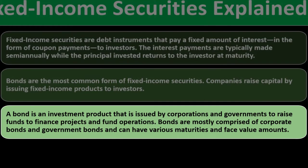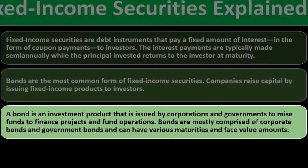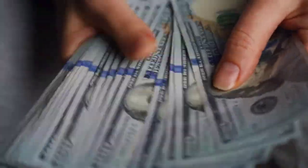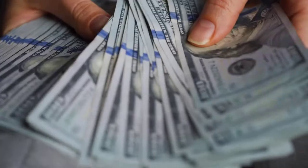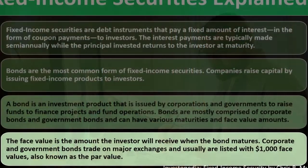A bond is an investment product issued by corporations and governments to raise funds to finance projects and fund operations. Bonds are mostly comprised of corporate bonds and government bonds and have various maturities and face value amounts. The face value is the amount the investor will receive when the bond matures — essentially the return of principal. Corporate and government bonds trade at major exchanges and are usually listed with a $1,000 face value, also known as the par value.